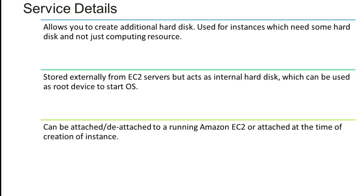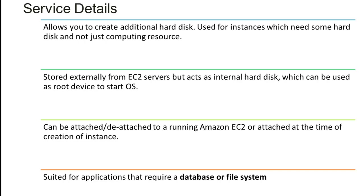An EBS volume can be attached or detached to a running Amazon EC2 instance, or attached at the time of instance creation. If the boot device was created with an instance store, you cannot attach it after it starts running. EBS is suitable for applications that require a database or file system with a large number of files.